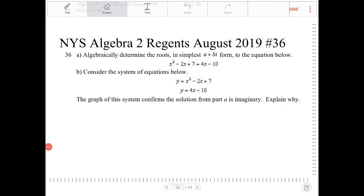Algebraically, determine the roots in simplest a plus b i form to the equation below. And the second half of the problem, consider the system of equations below. y equals x squared minus 2x plus 7 and y equals 4x minus 10. The graph of the system confirms the solution from part a is imaginary. Explain why.